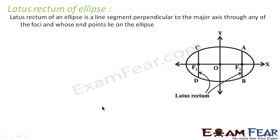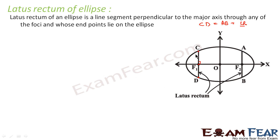Now let's see the latus rectum of an ellipse. The latus rectum is a line which passes through the focus, perpendicular to the axis, and touches the ellipse. So CD or AB is the latus rectum — both are the same. Its endpoints lie on the ellipse.